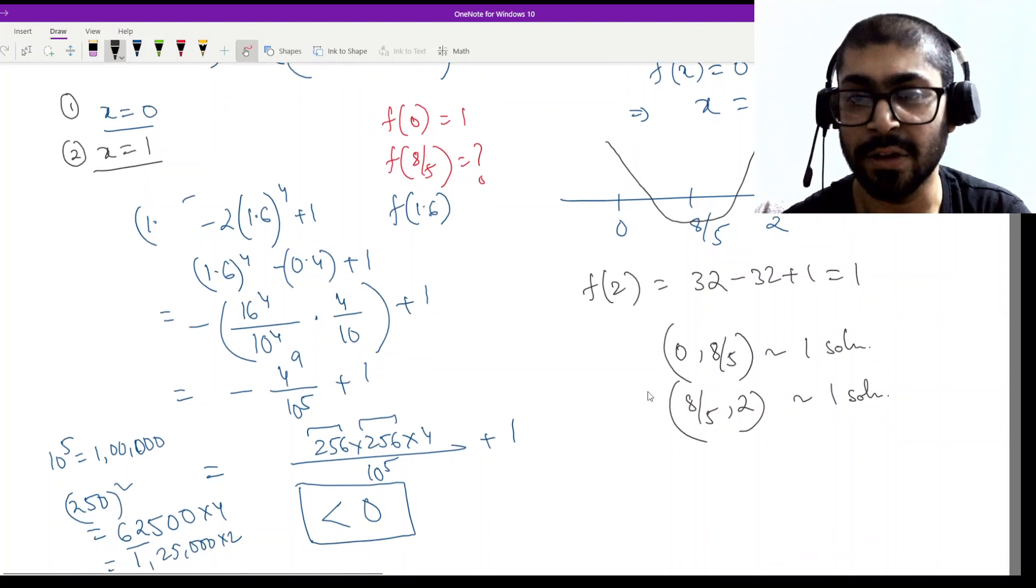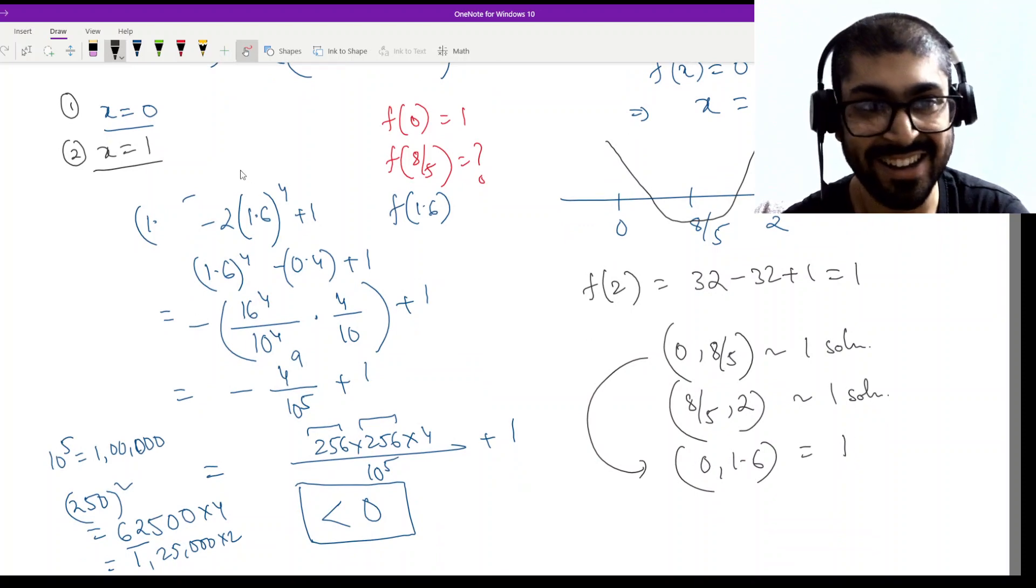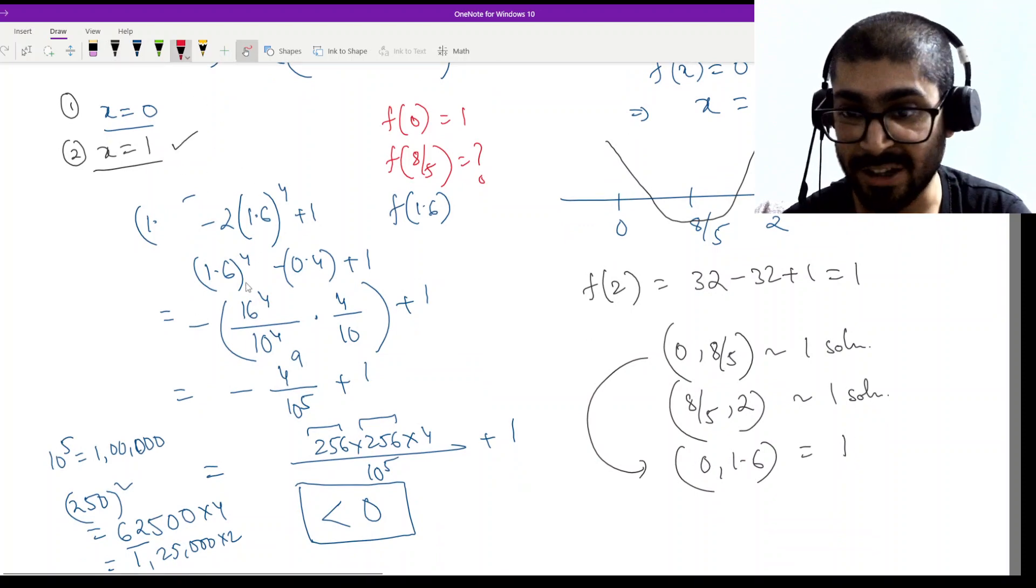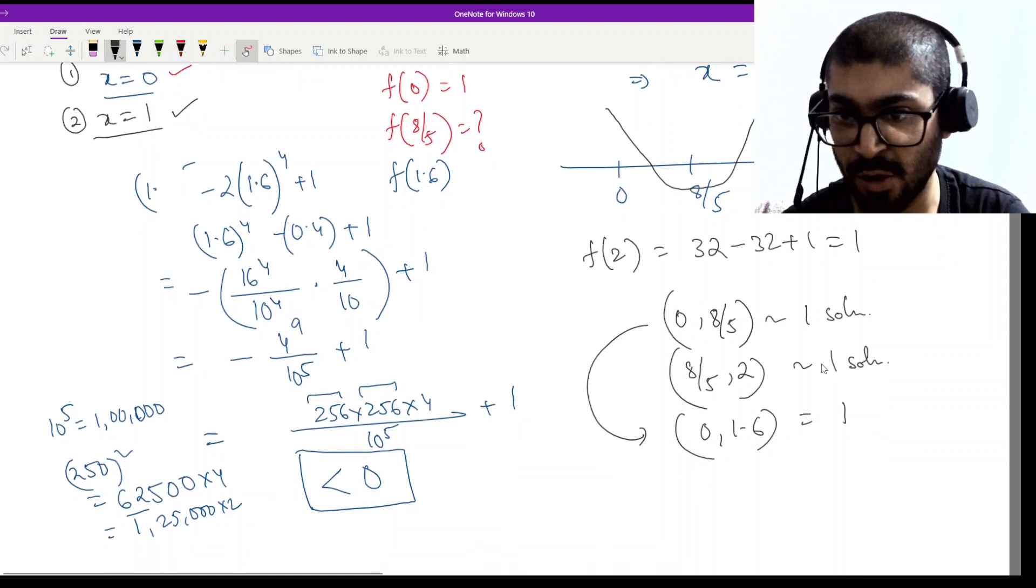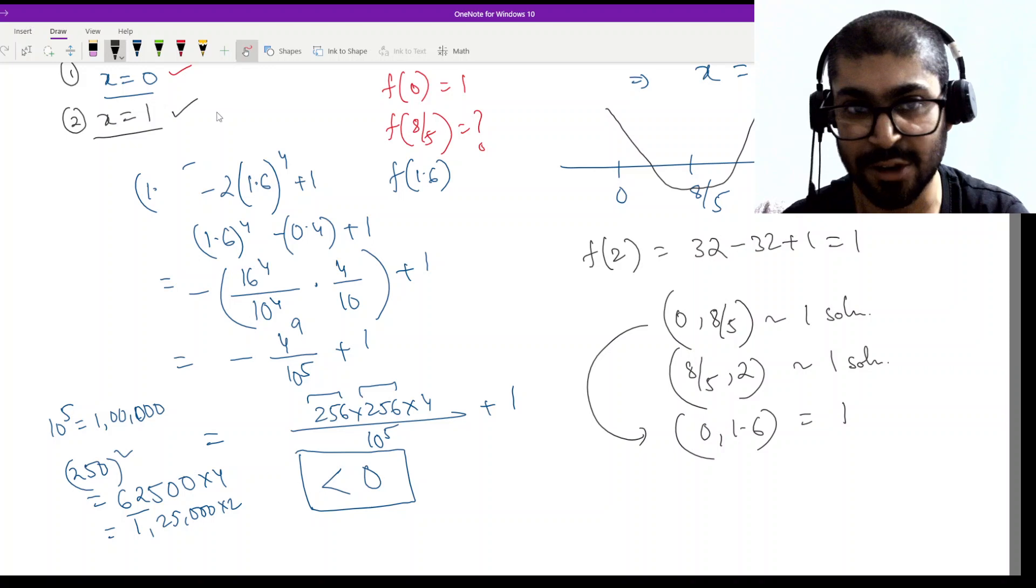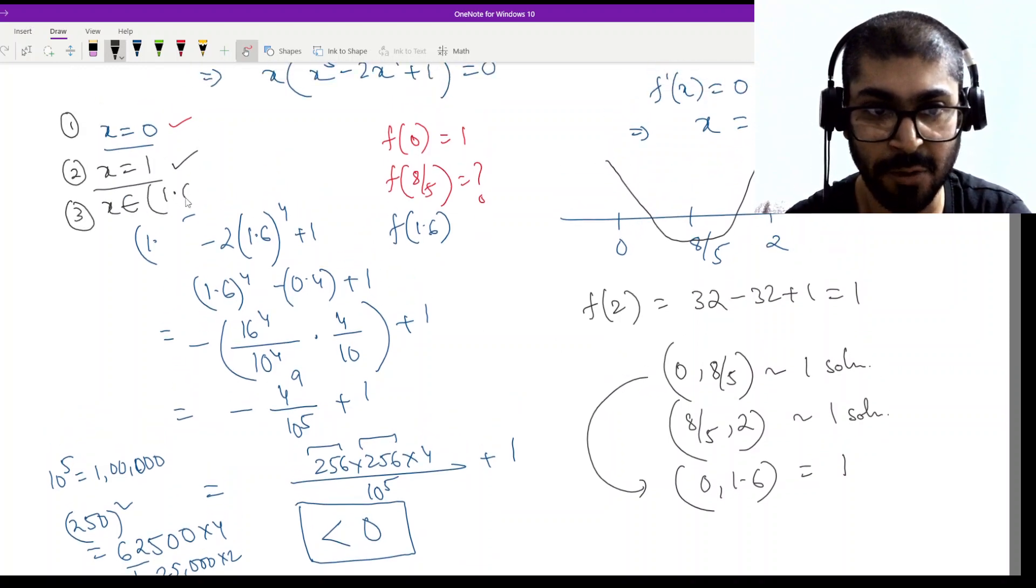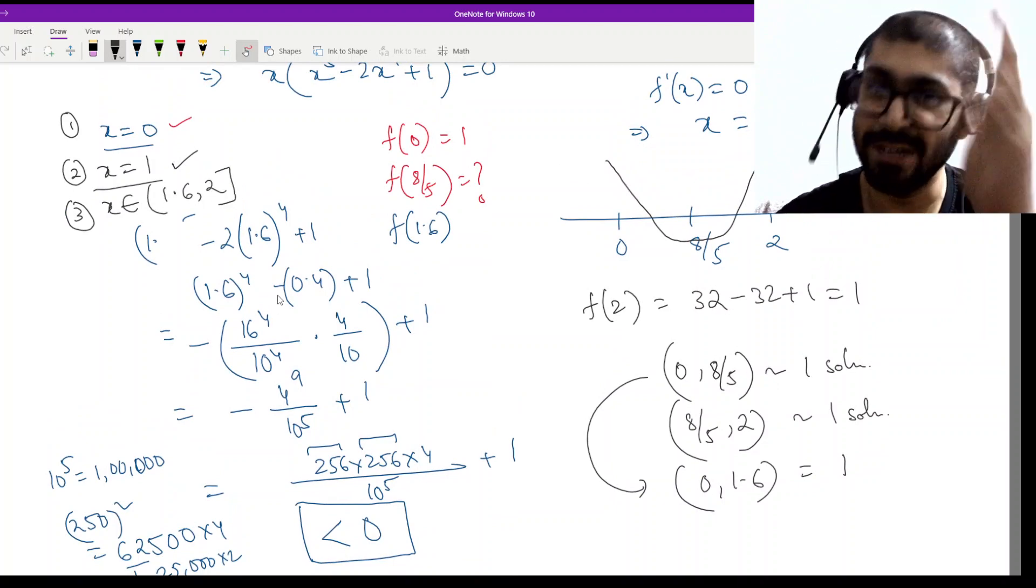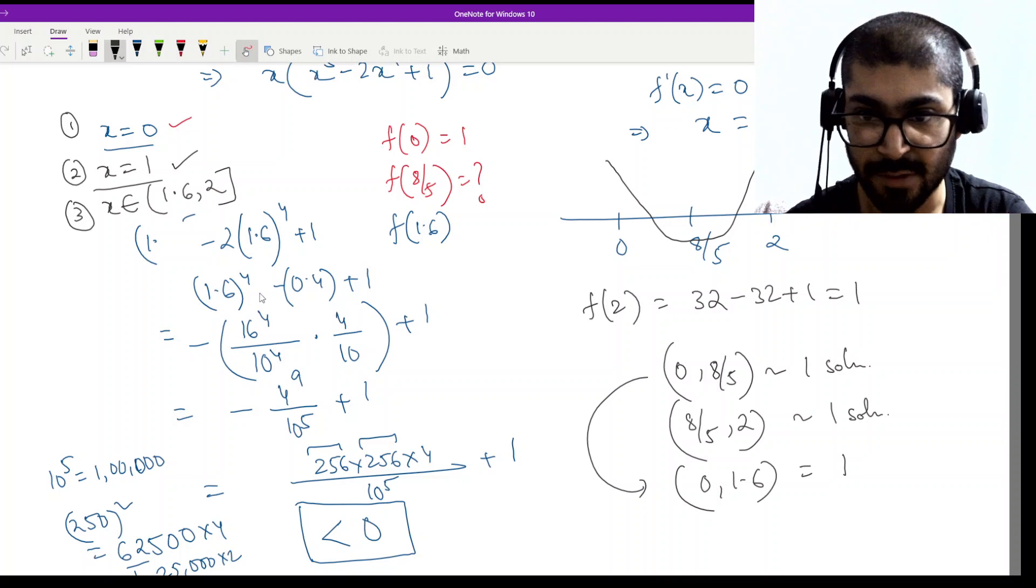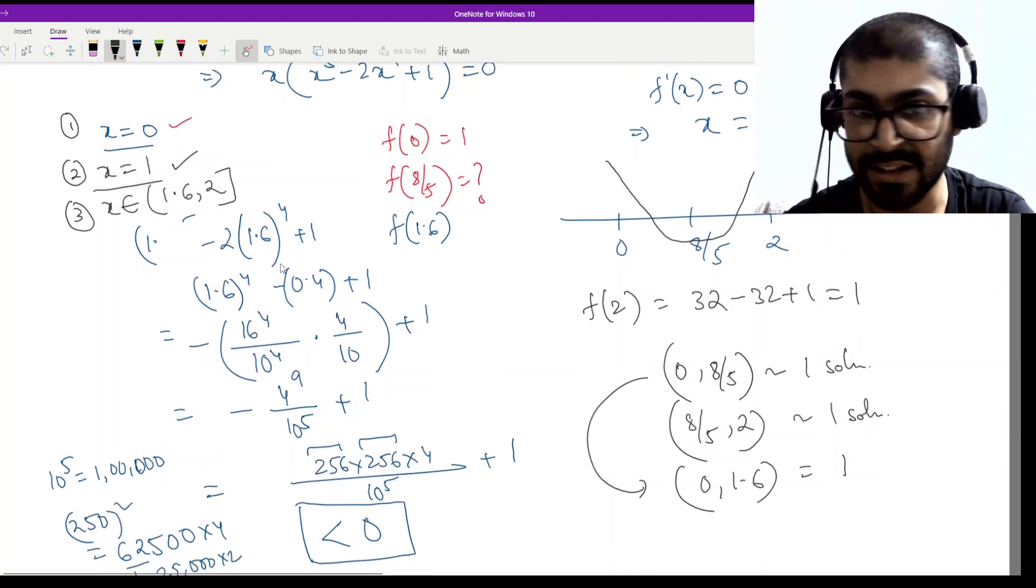This means it will display this behavior. If it displays such behavior, this means between 0 and 8 by 5 there is one solution, and between 8 by 5 and 2 there is one more solution. So 0 to 1.6 - which solution was in this? This is 1, the solution we already found. Be very careful here - don't do double counting. And here another solution is coming between 1.6 and 2. This is the third solution. X belongs to some fixed value between 1.6 to 2. 3 solutions found.